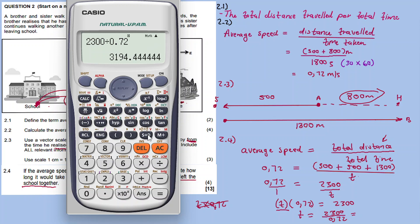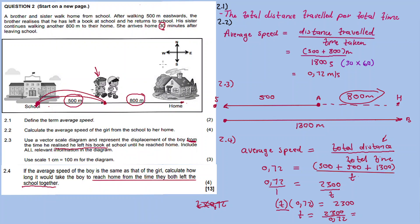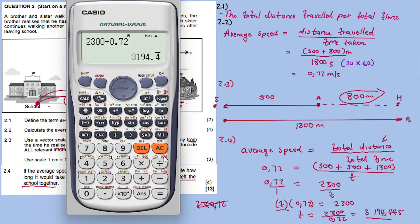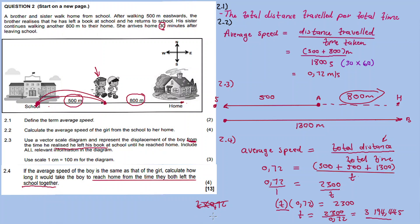T equals 2300 divided by 0.72, which equals 3194.44 seconds. To express this in minutes, divide by 60. So T equals 53.24 minutes.